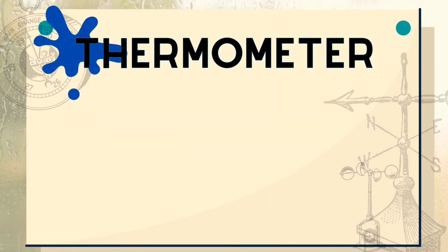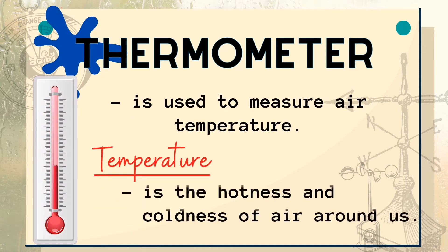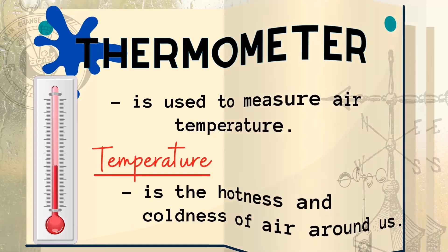What is a thermometer? It is used to measure air temperature. Temperature is the hotness and coldness of air around us. In order to measure the hotness or coldness of air, we use the thermometer. The time of day and the time of year also affect the air temperature.